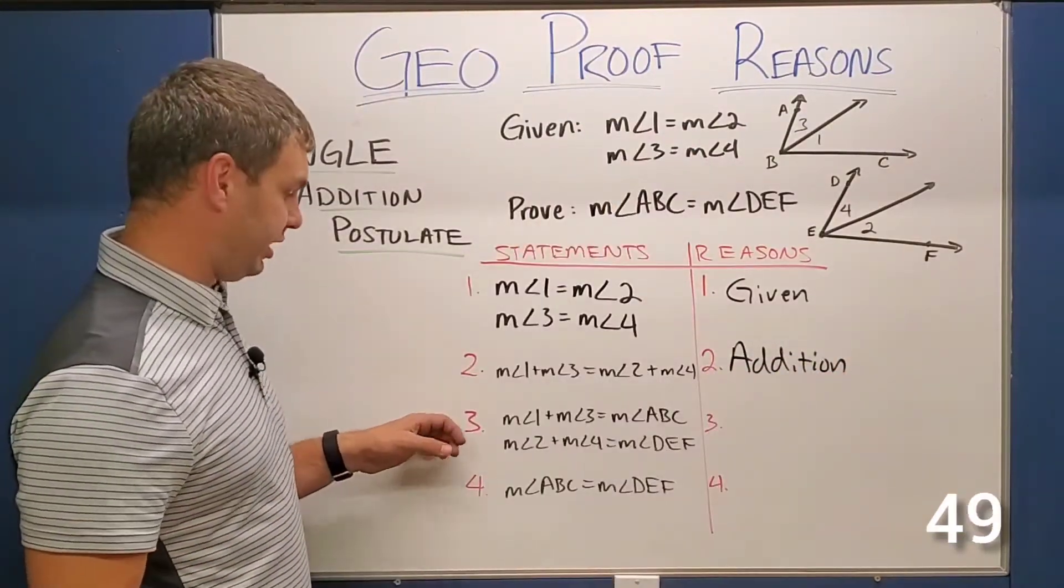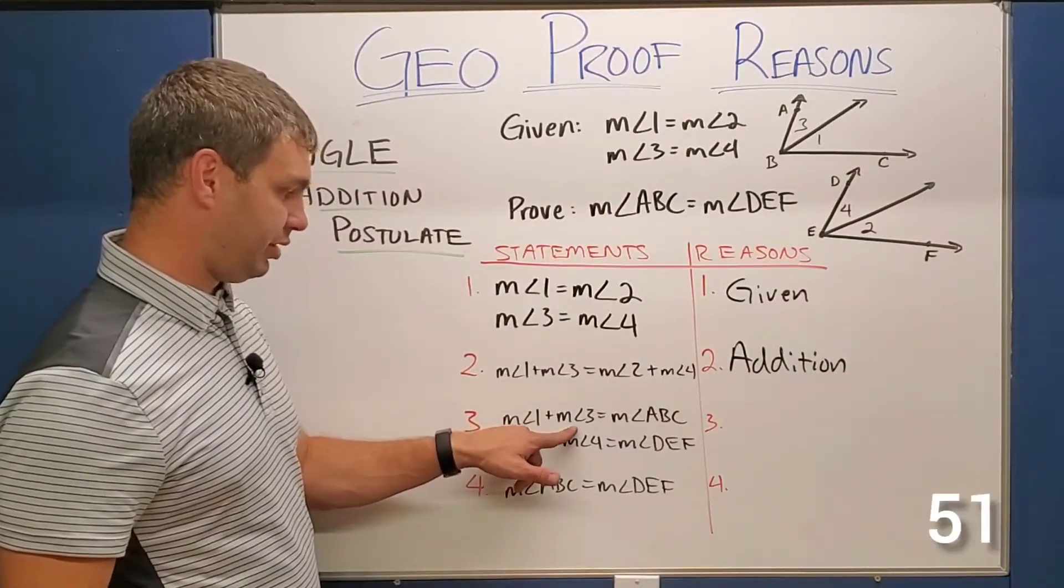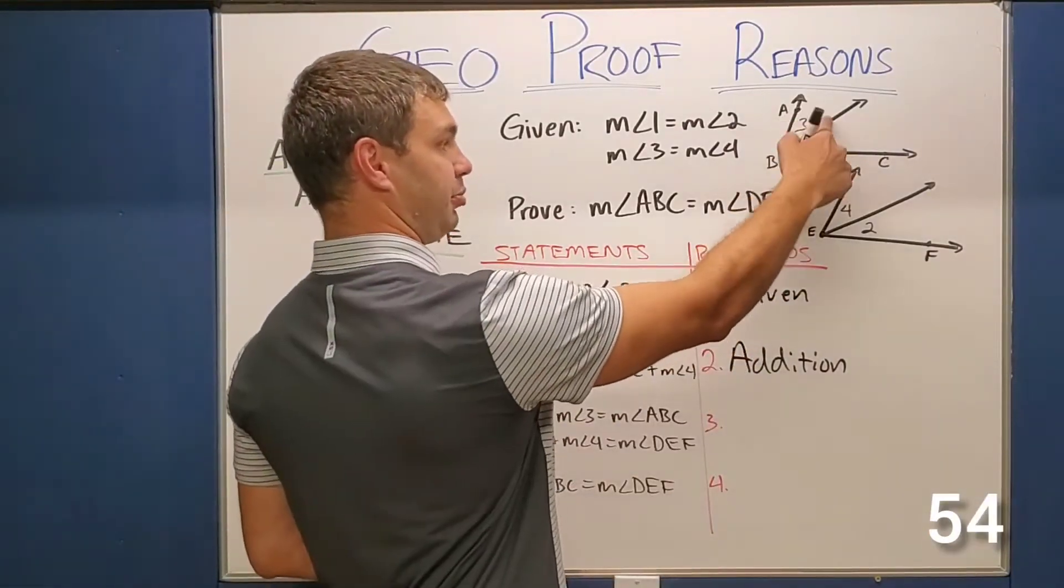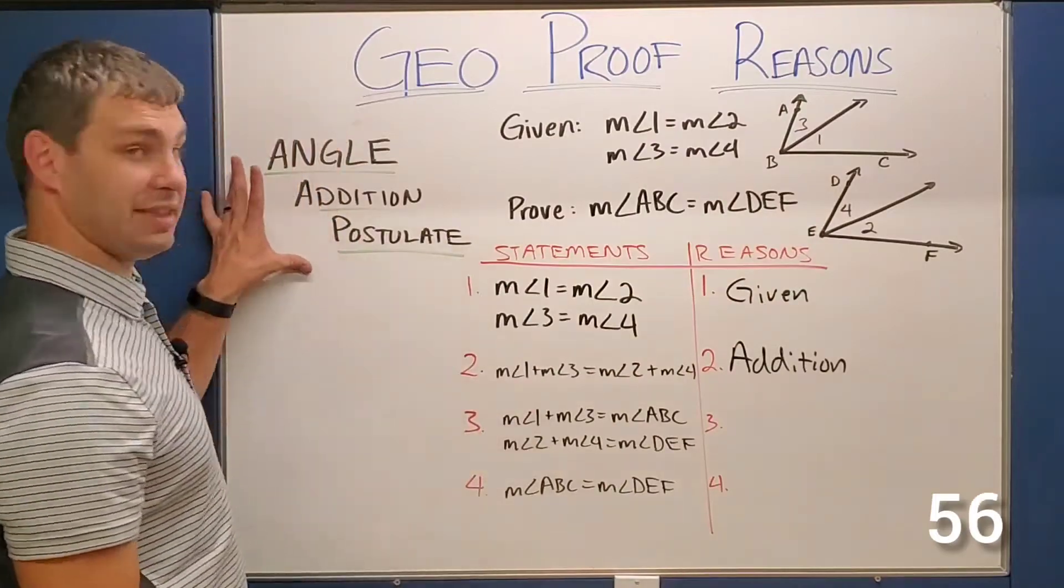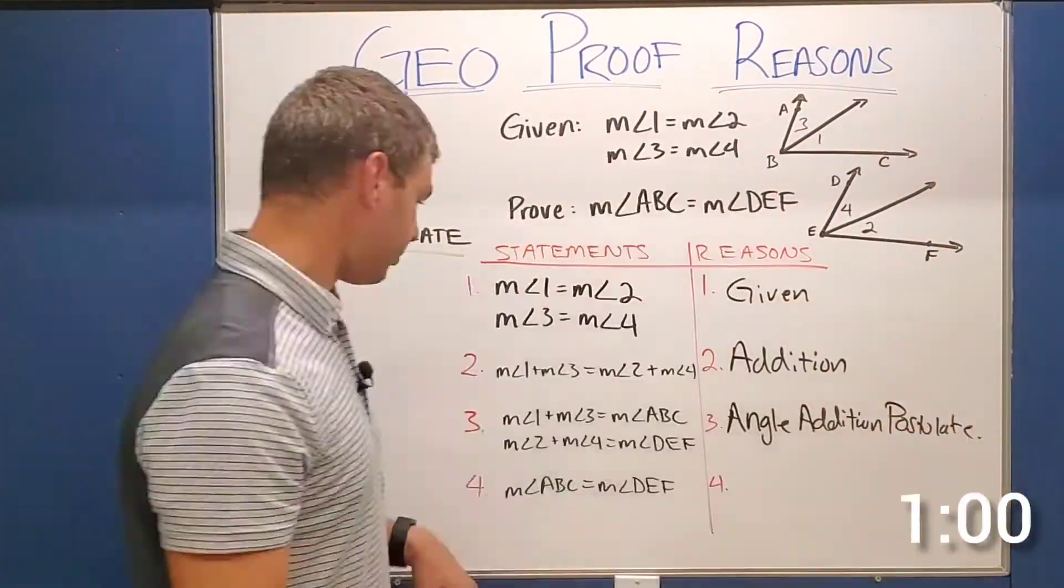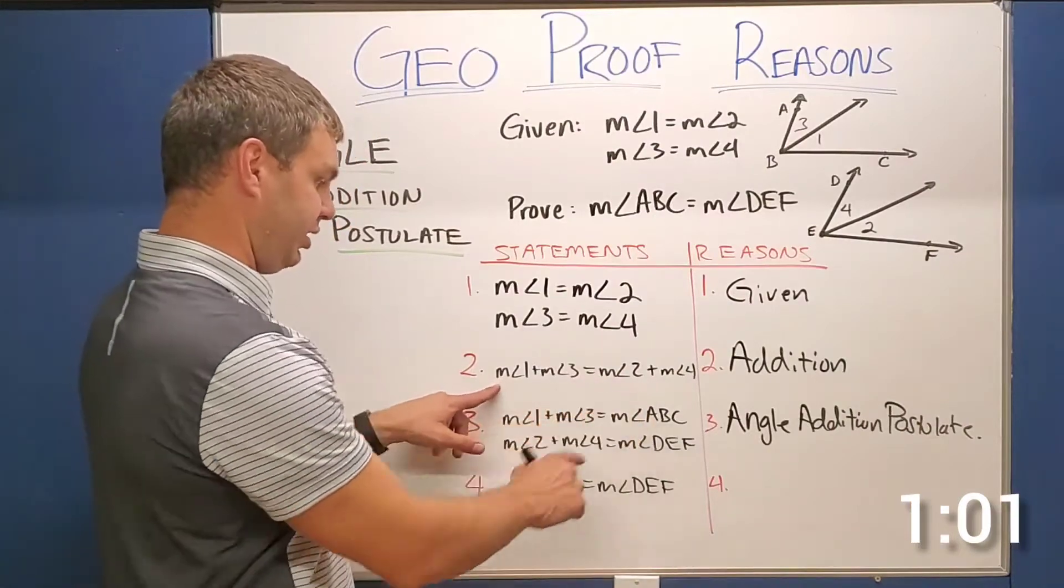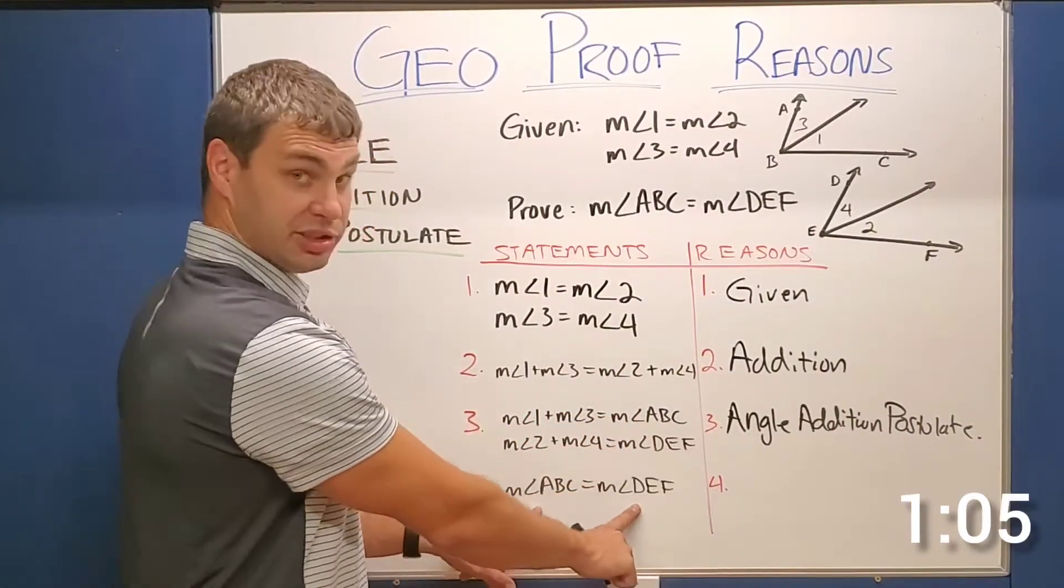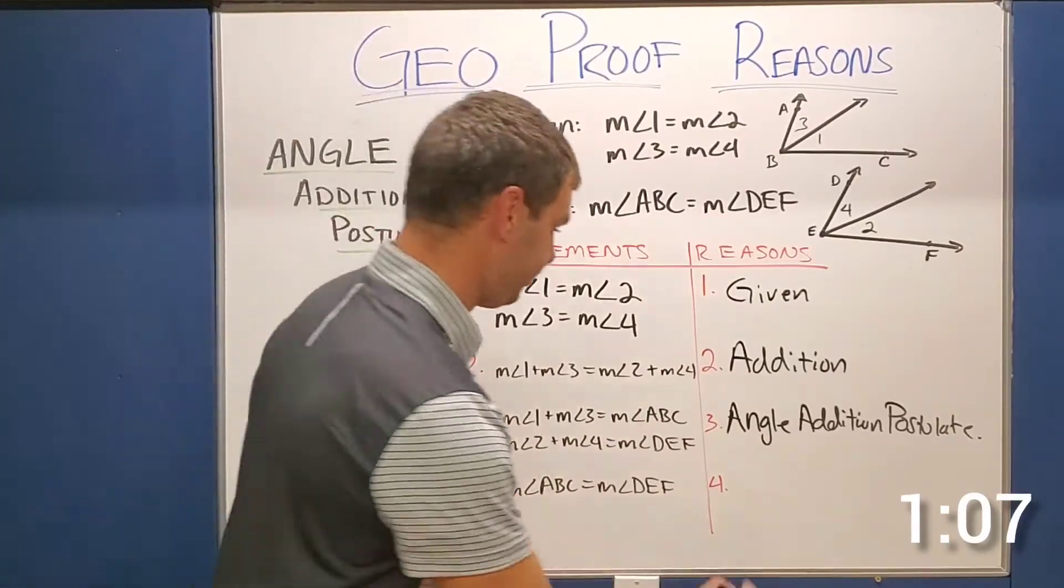And then number three is one we're interested in. It says measure of angle one plus measure of angle three equals the measure of angle ABC. One plus three, part plus the part equals the whole. That is angle addition postulate and the same reason for the second line. And then lastly, since we had line two where these two parts equal each other, I can now say that what they equal equal each other as well by substitution.